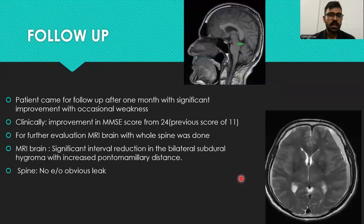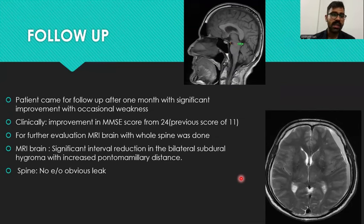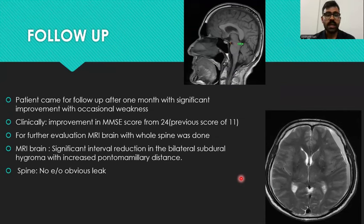On follow-up one month after the procedure, the patient showed significant improvement with only occasional weakness complaints. Clinically, the patient improved from an MMSE score of 11 to 24. Further evaluation with brain and whole spine MRI was planned. The MRI brain showed significant interval reduction in bilateral subdural hygromas with increased pontomammillary distance. The spine showed no evidence of an obvious leak.